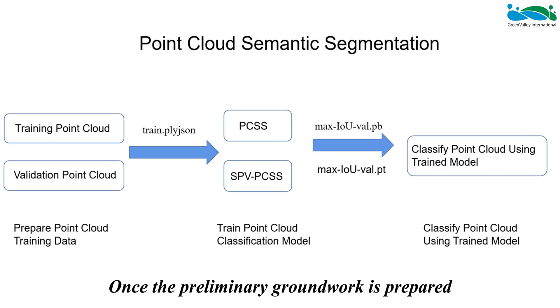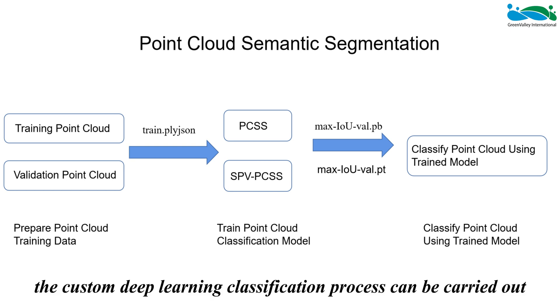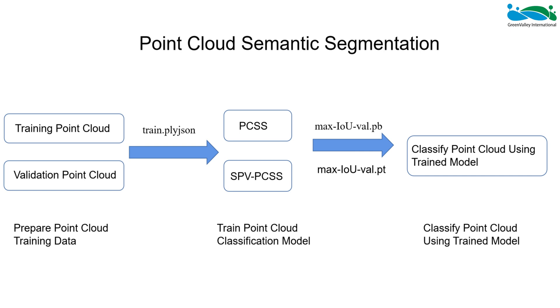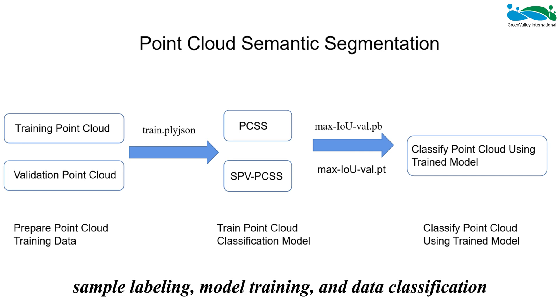Once the preliminary groundwork is prepared, the custom deep learning classification process can be carried out, which is divided into three main steps: sample labeling, model training, and data classification.